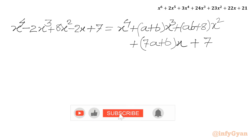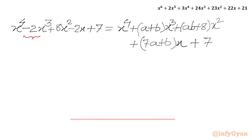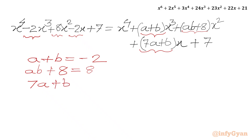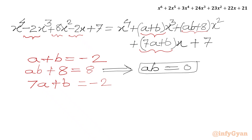Now comparing coefficients with the left-hand side, we get three equations: a plus b equals minus 2 (coefficient of x cubed); ab plus 8 equals 8 (coefficient of x squared); and 7a plus b equals minus 2 (coefficient of x). From the second equation, subtracting 8 from both sides gives ab equals 0. By the zero product rule, either a equals 0 or b equals 0.